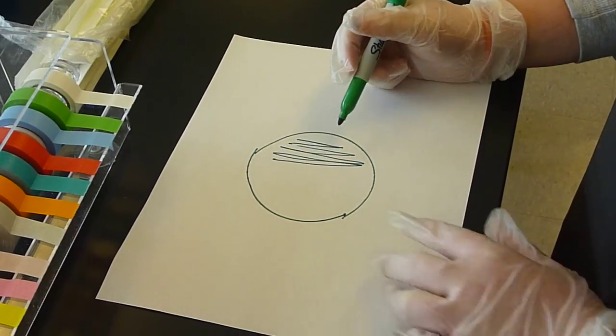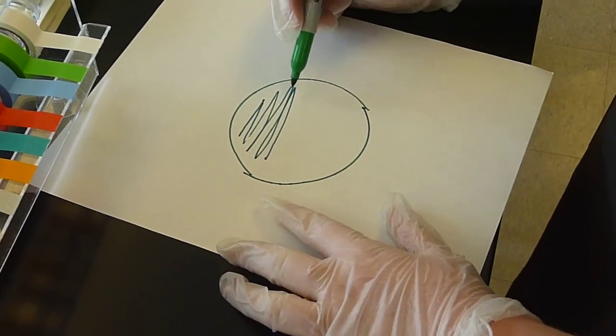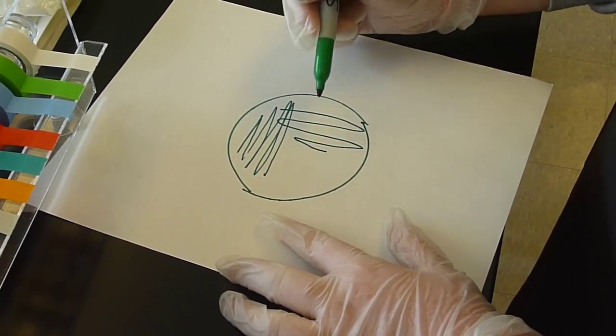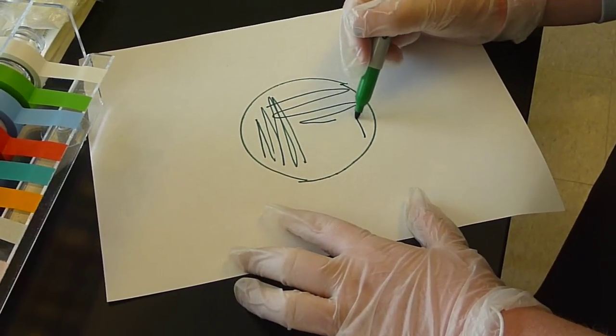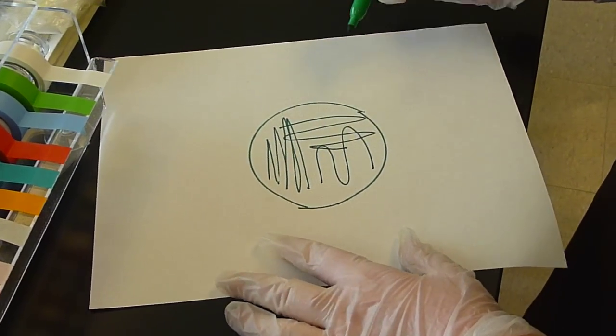The pen's representing the inoculating loop, and so she's spreading the E. coli out, and then she rotated it 45 degrees, and then she makes another streak right there.